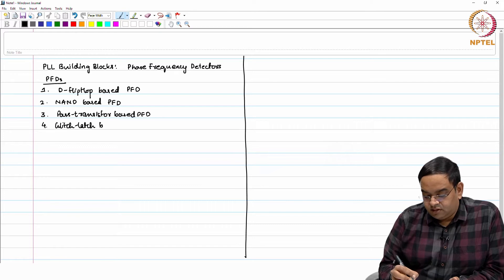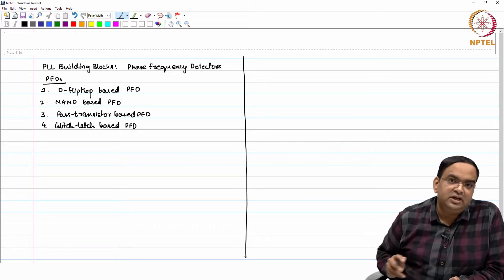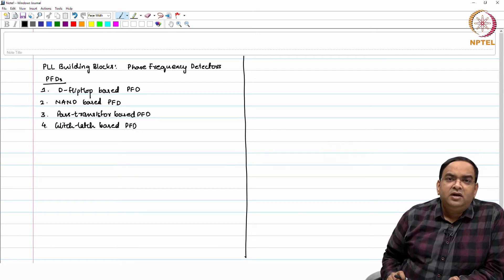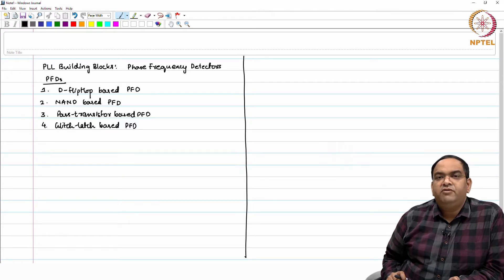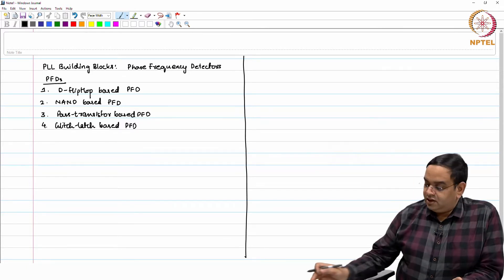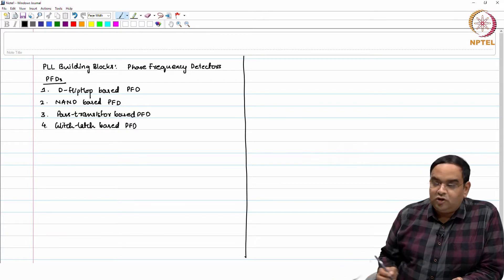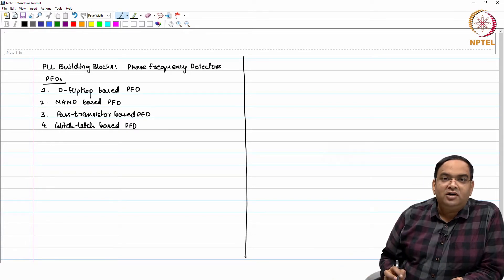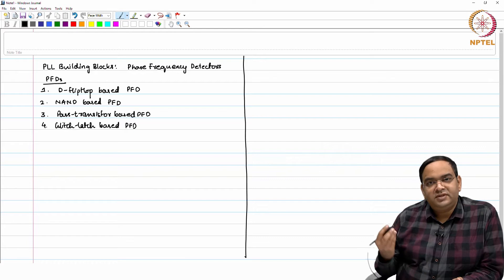The reason that we have these other two PFDs - pass transistor and glitch latch based PFD - is specifically to reduce the reset time and to minimize the window during which the average output of the PFD is negative even when the phase error is positive. But there are many other designs. This list is not ending here.